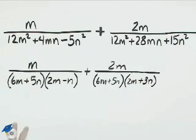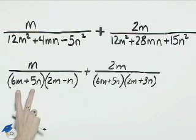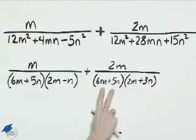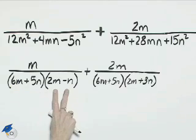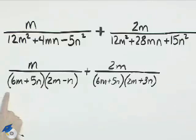The least common denominator will be the product of all of these different factors. 6m plus 5n we have in both. 2m minus n we'll need over here, and 2m plus 3n we'll need over in this first fraction.